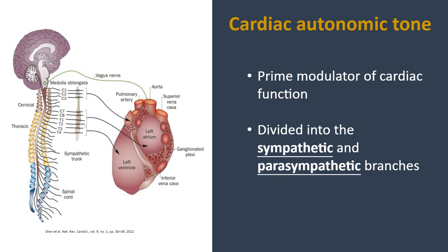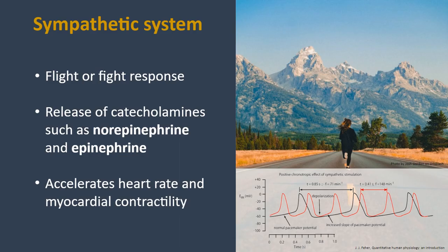The sympathetic innervation originates from the superior cervical ganglia and some of the thoracic ganglia, connecting to the atrium and ventricles including the sinoatrial (SA) node and the atrioventricular node. For the parasympathetic branch, fibers originate mostly in the medullary nuclei and on the vagus nerve, traveling all the way to the superior vena cava region and to the SA and AV nodes.